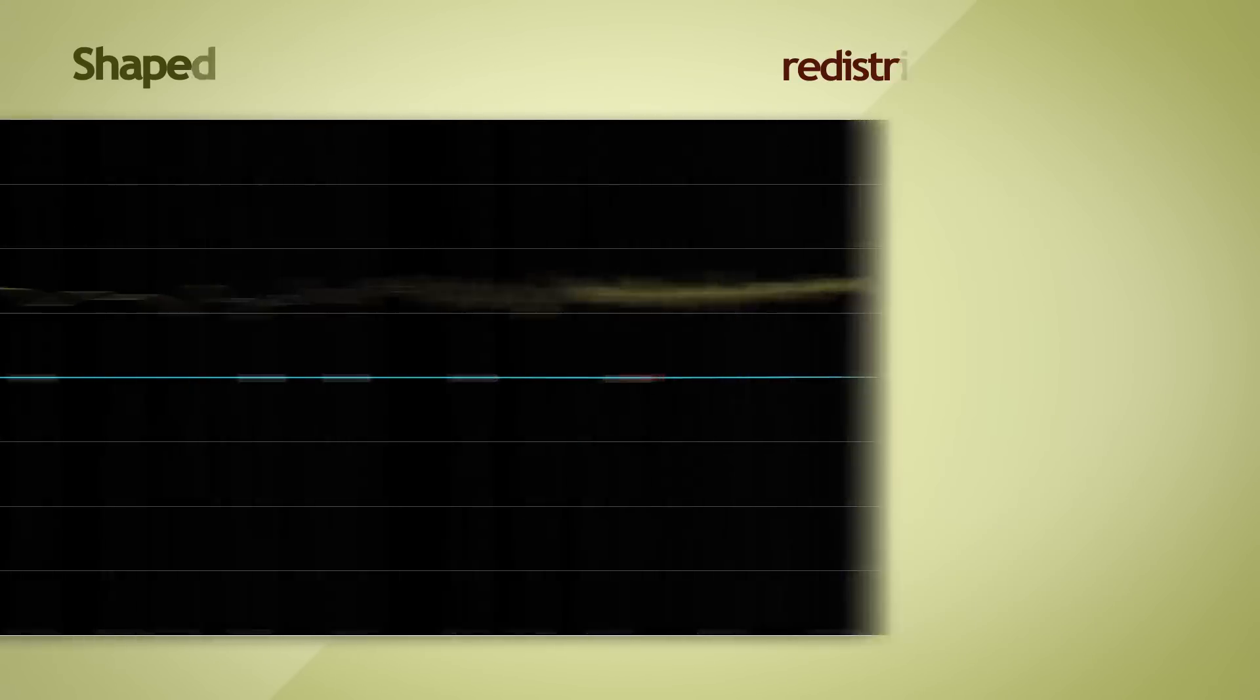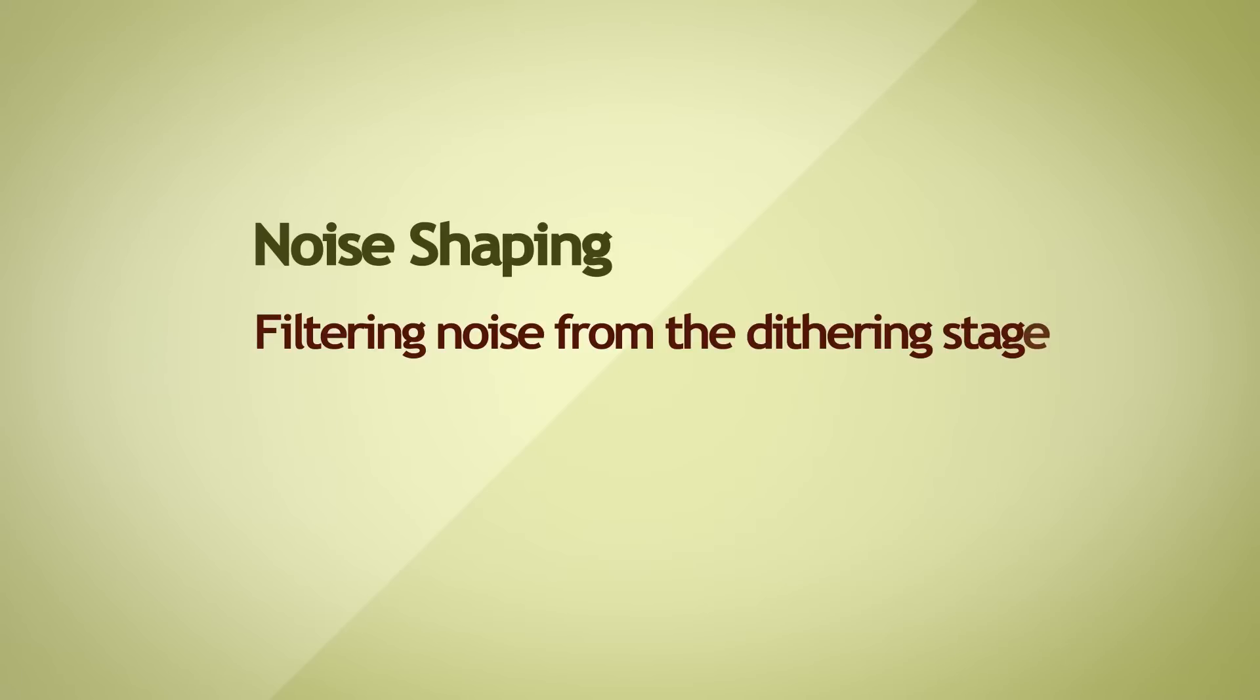This is essentially noise shaping, filtering the noise from the dithering stage to get a little bit more dynamic range in our audio. There are several noise shaping algorithms in use today, and I won't be going over all of them, but I'll give you a taste of what a simple noise shaping algorithm would look like.